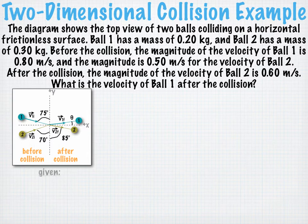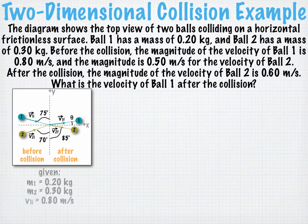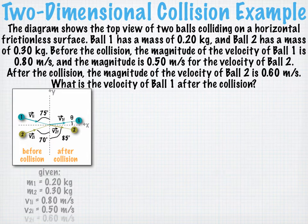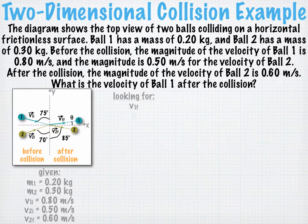So what are we given? We're given the mass of each ball and the magnitude of the initial velocity for each ball, as well as their directions given by angles in the diagram. We also have the magnitude and direction of the final velocity of ball two. We're looking for the final velocity of ball one — a magnitude and a direction. We'll find the direction by finding the angle theta in the diagram. We're looking for two unknowns, so we need two equations.